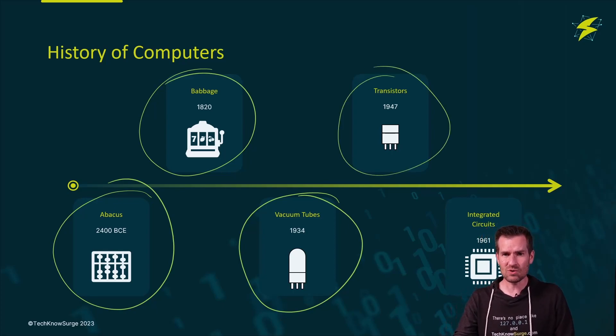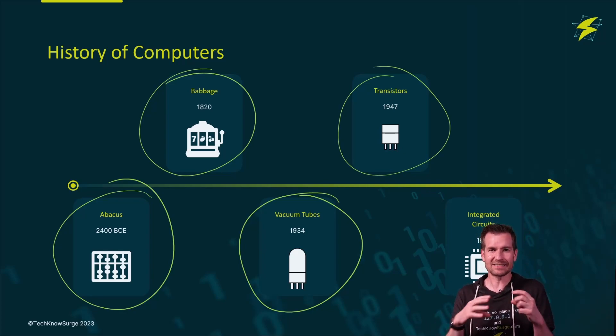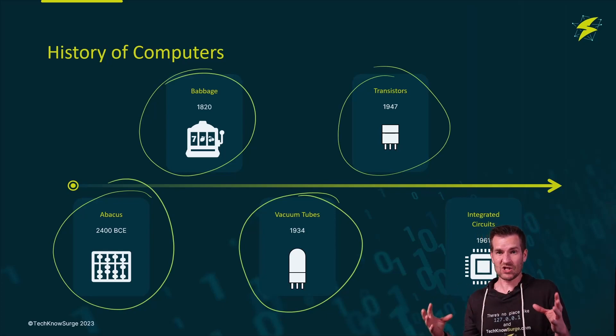Transistors are interesting. They use something called semiconductors in order to turn these little switches on and off. And then you string these little transistors all together to create a chain for calculation. So these transistors were starting to be used then at that point in time.